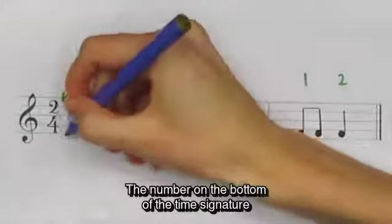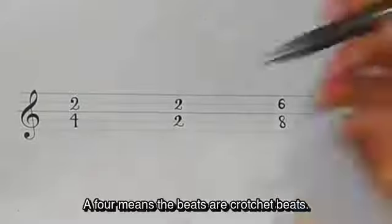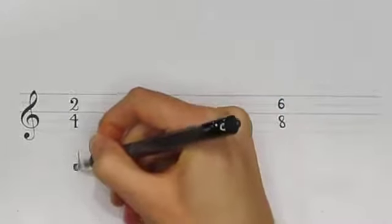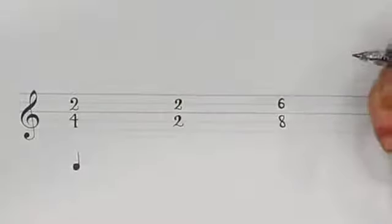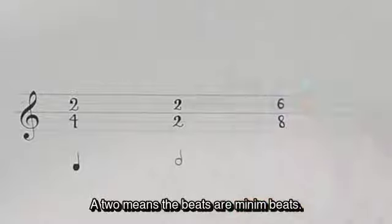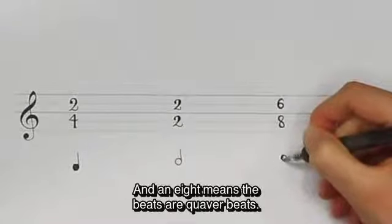The number on the bottom of the time signature tells us what kind of beats they are. A 4 means the beats are crotchet beats. A 2 means the beats are minim beats. And an 8 means the beats are quaver beats.